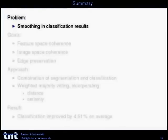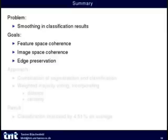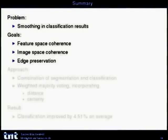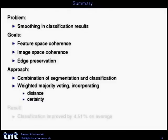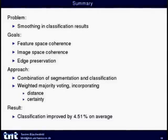To summarize: the main problem was smoothing of classification results. The goals were feature space coherence from classification, image space coherence from segmentation, and edge preservation. The approach combines segmentation and classification in parallel, weighting results by distance and certainty information, resulting in an average improvement of 4.51% on our test sets. Thank you for your attention, and I am happy to answer questions.